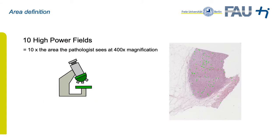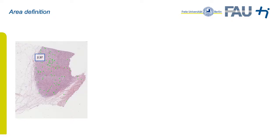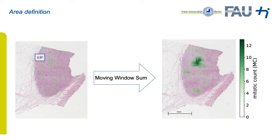Since this paper is all about area selection, let's define the area we're talking about. In most grading schemes, the area to be counted within is equal to 10 so-called high power fields. One high power field is the area the pathologist sees at 400× magnification. This varies with the optical parameters of the microscope. We settled on the definition of Meuthen and defined the area to be 2.37 square millimeters. Knowing this, we can derive a map of all possible mitotic counts from a microscopy slide using a window of 2.37 mm², moving over the image and counting all mitoses within. The task becomes finding the center of the area with the highest mitotic count.